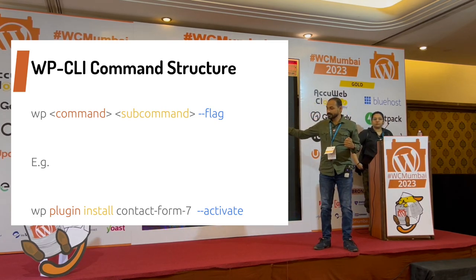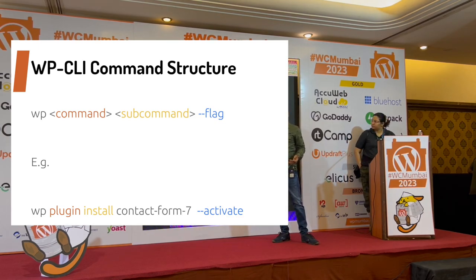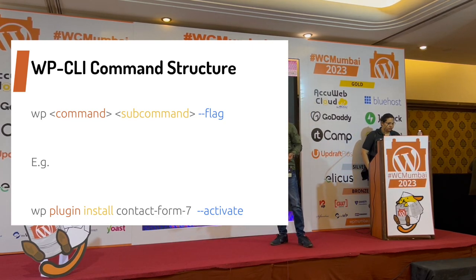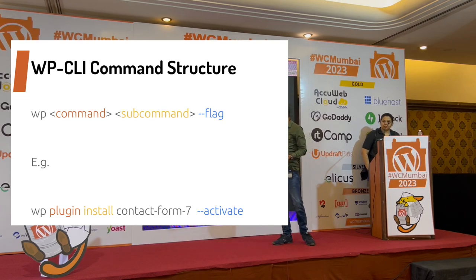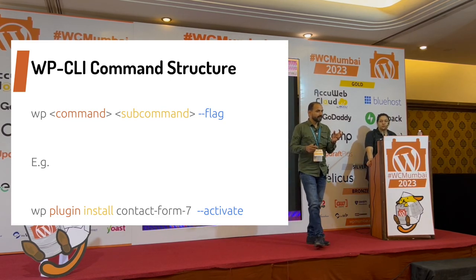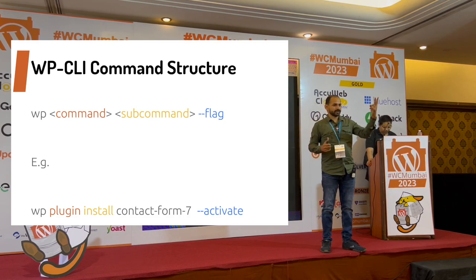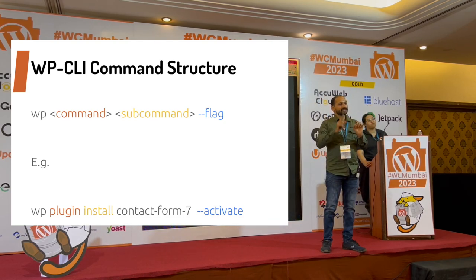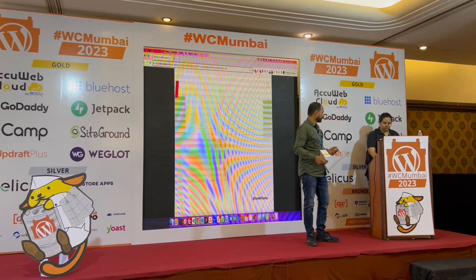After the main command, you write the subcommand. For example, if you are installing or activating a plugin, that is the subcommand. Then you pass the parameter — for instance, here I am installing the Content from Server plugin and passing the activate flag. It will download the plugin and activate it automatically. On the UI, you would do this in two steps: search, install, then click activate. With WP-CLI, it's done in a single command.